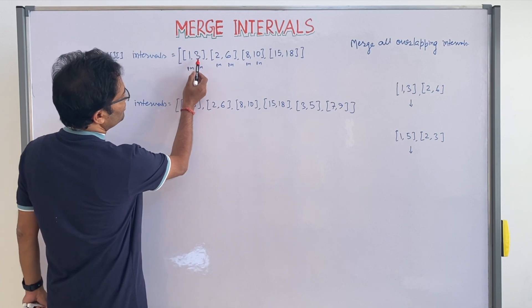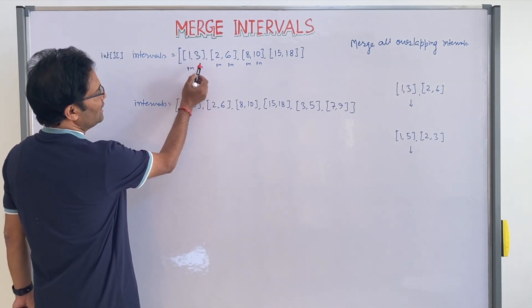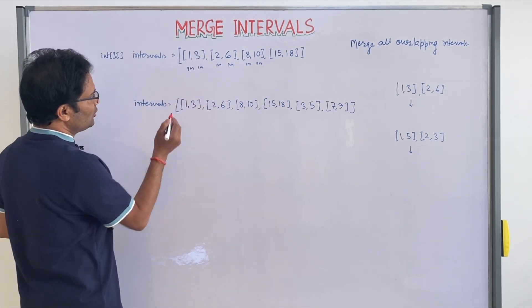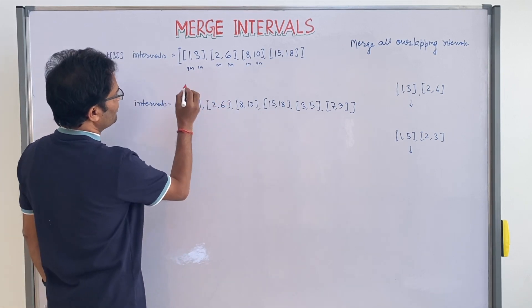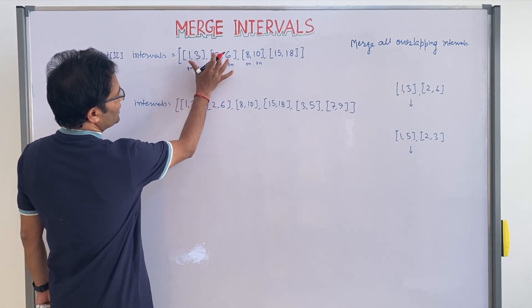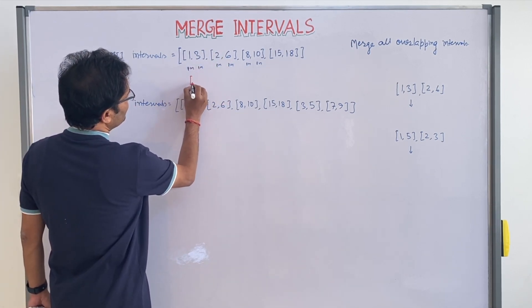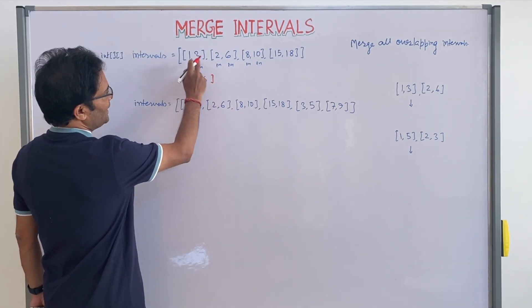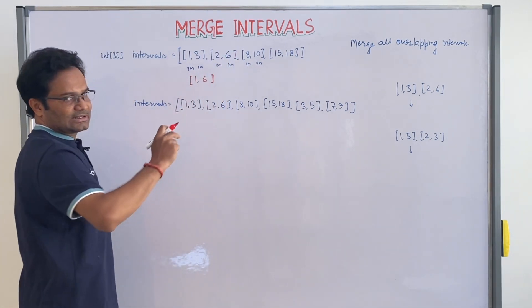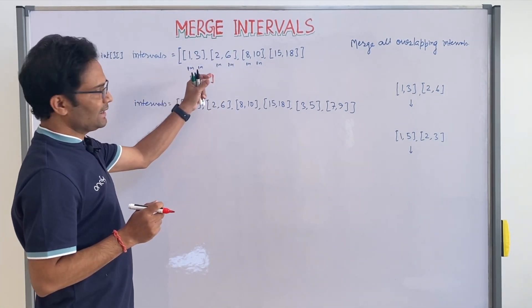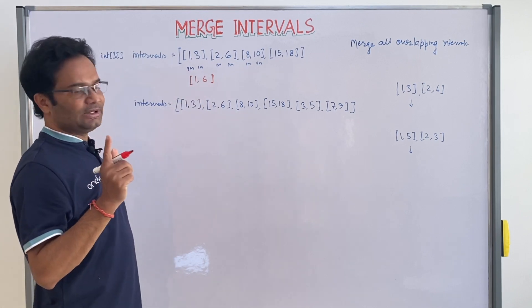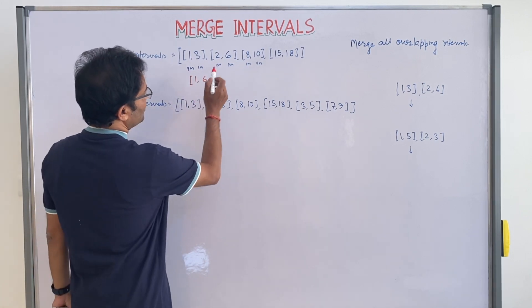Because in the first meeting you will be there till 3 o'clock, and the another meeting is starting from 2 o'clock — so both are overlapping. You can combine both into 1 to 6, because this meeting starts from 1 and ends at 6. So I can overlap both and make one meeting that is 1 to 6.